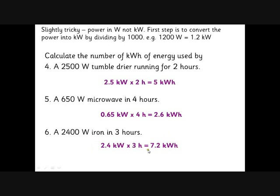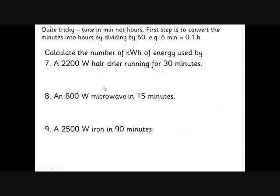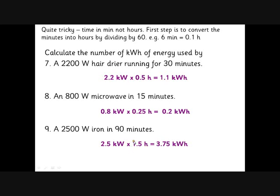Slightly harder is if they give you time in minutes, because it's harder to turn minutes into hours. Every 6 minutes is a tenth of an hour. Sometimes they give you a nice easy one, so 30 minutes - hopefully you can see 30 minutes is 0.5 hours. The trap is some people write that as 0.3 hours, but if you think about it, 30 minutes is half an hour, half is 0.5. 15 minutes is a quarter of an hour, so 0.25. And 90 minutes is an hour and a half, 1.5 hours.